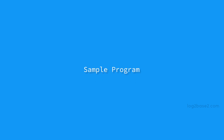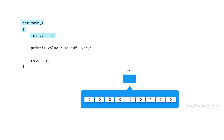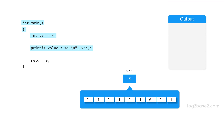Now let us see a sample program which prints the bitwise one's complement of four. We have the main function and we are declaring the integer variable var and initializing it with four. We print value equal to percentage-d tilde var, that is the bitwise one's complement of var. We will get the output: value equal to minus five, and finally the program returns zero.